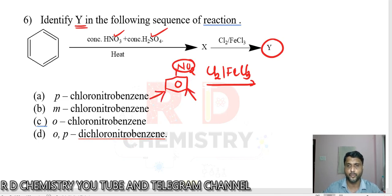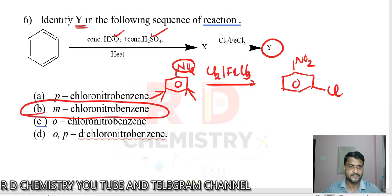Remember, nitro group is a meta directing group. It should go to the meta position. One of the meta positions should be occupied, so we should get chlorine at the meta position. We should get meta chloronitrobenzene. So B is the answer.